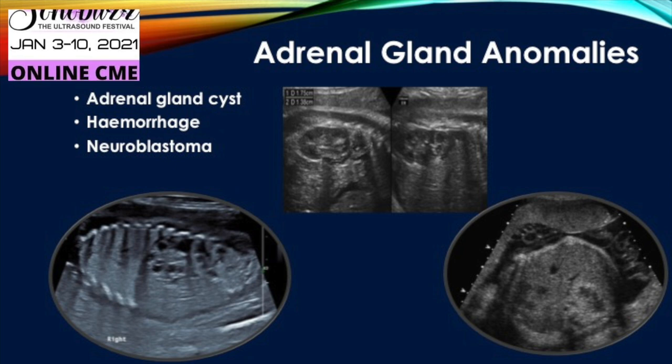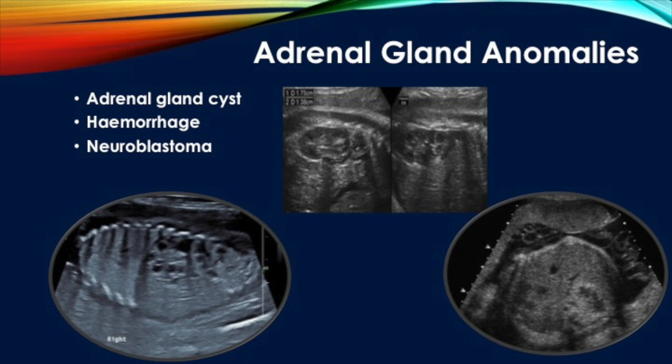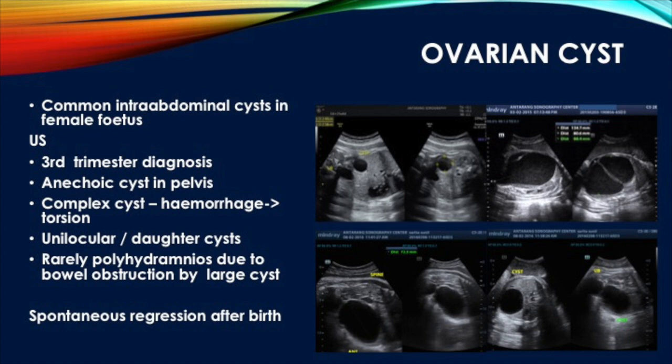Other adrenal anomalies seen in the prenatal period include adrenal gland cysts — rounded lesions just above the kidney which may be anechoic or have internal echoes — adrenal hemorrhage presenting as a mass, and neuroblastoma, which is a very rare finding.